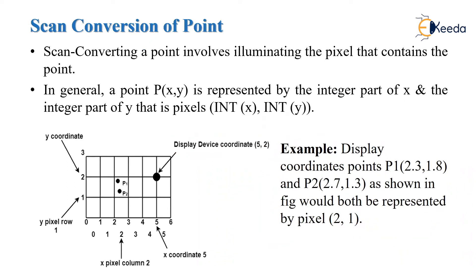If we want to perform scan conversion of a point, we have to identify the pixel that contains the point. The point will have coordinates x, y, but both coordinates should have integer values because our computer screen contains only integer points and not floating point values. For example, p1 has floating values 2.3, 1.8 and p2 has floating point values 2.7, 1.3.